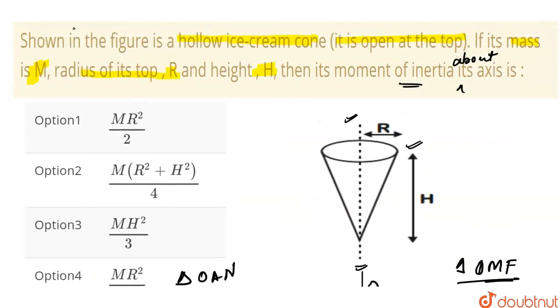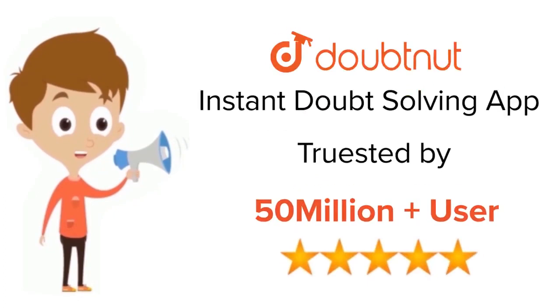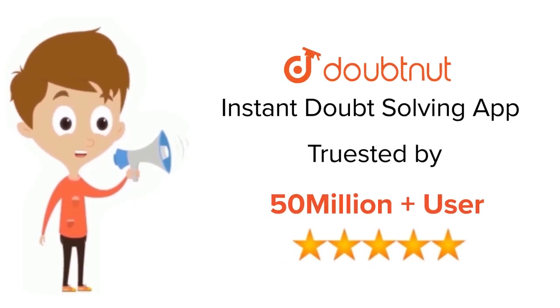So option 1 is correct. For class 6 to 12, IIT JEE and NEET level, trusted by more than 5 crore students — download DoubtNet today.